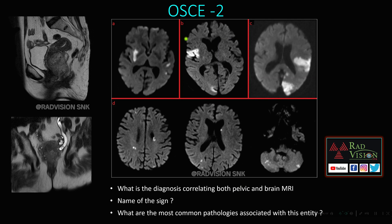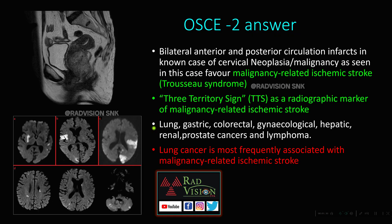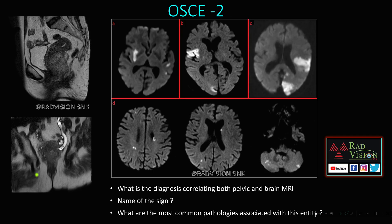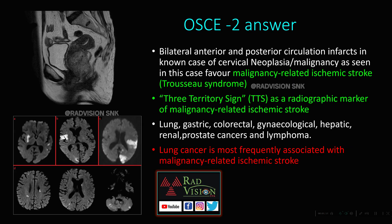Next, OSCE 2. You can see this is an MRI pelvis and this is an MRI brain. What is the diagnosis based upon features in both pelvic and brain MRI? What is the sign and what are the common pathologies? Here you can see there is a heterogeneously T2 hyperintense signal mass lesion noted in the cervix with extension to adjacent structures, partly extending to the parametrium, and also infiltration into the left vaginal wall with left hydronephrosis — suggesting a neoplastic mass lesion arising from the cervix.